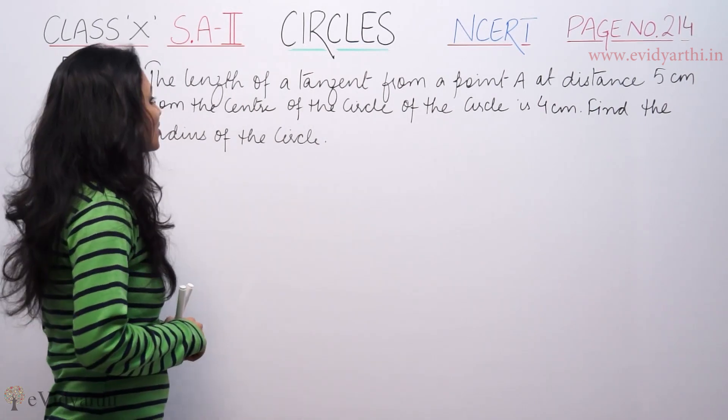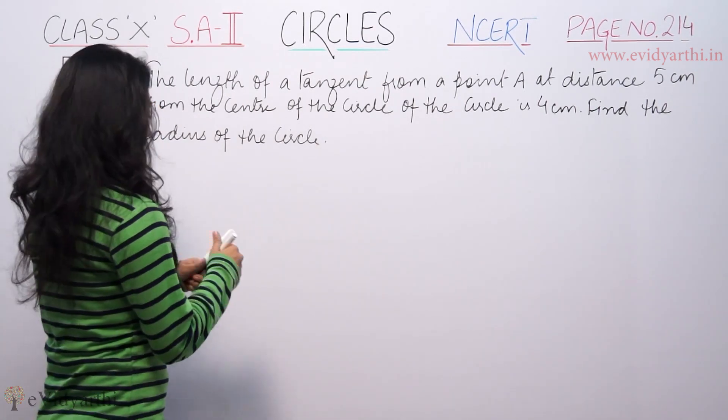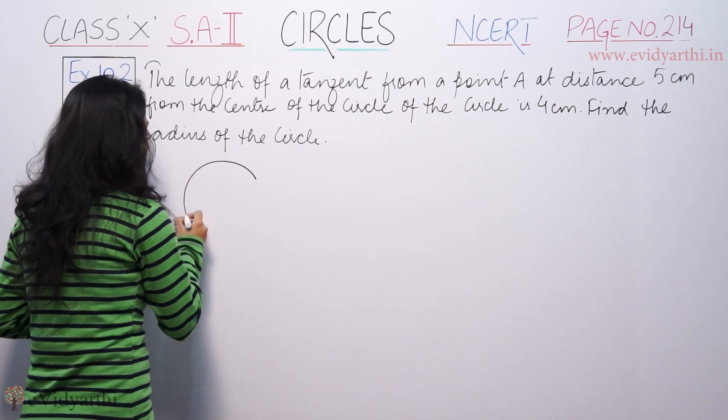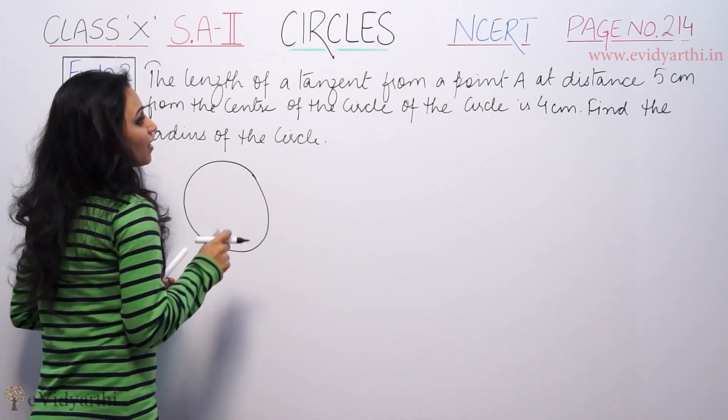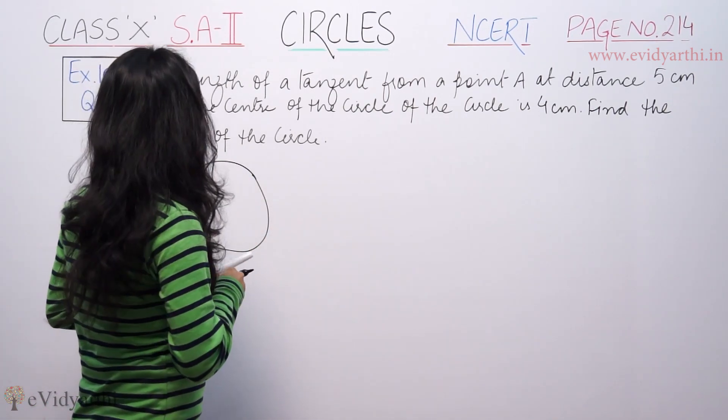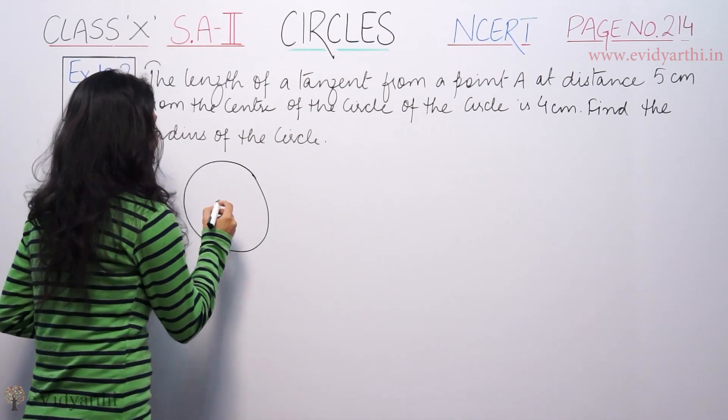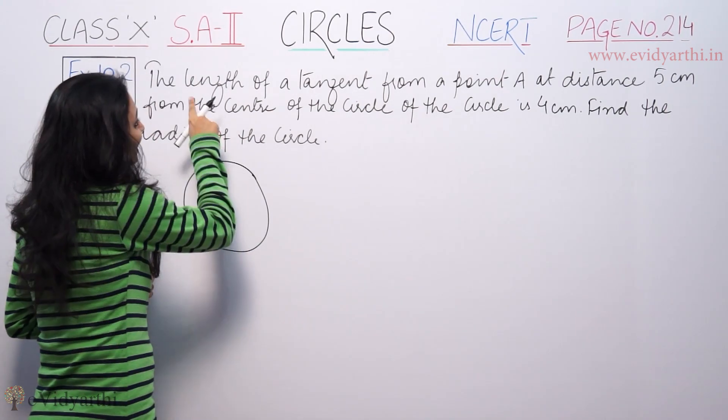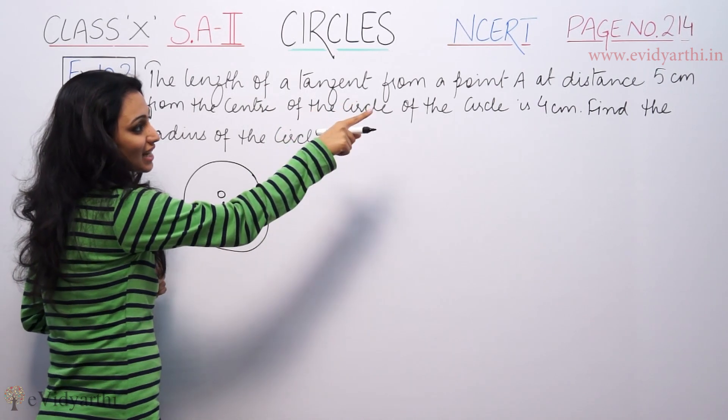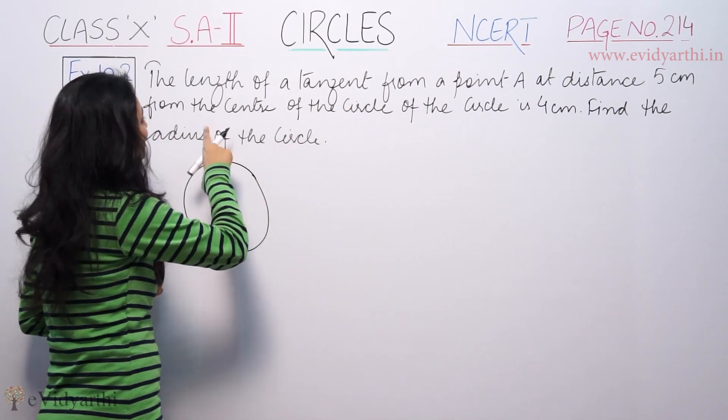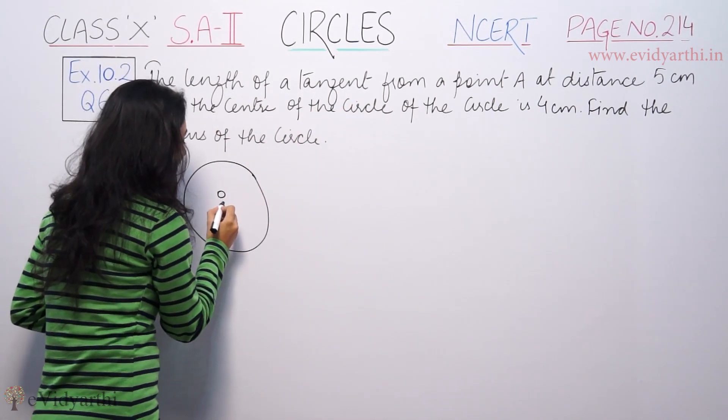This says the length of a tangent from point A. We have a circle here. From point A at distance 5 cm from the centre, let's suppose this is the centre. Length of a tangent from point A at a distance 5 cm from the centre, point A, 5 cm the distance from centre and length of a tangent from the centre of the circle is 4 cm.